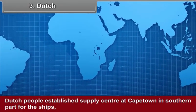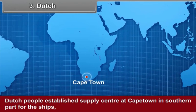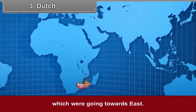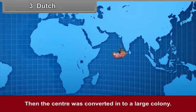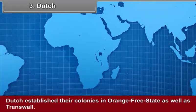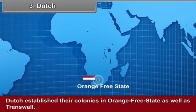Third, the Dutch. Dutch people established a supply center at Cape Town in the southern part for ships going towards the east. Then the center was converted into a large colony. Dutch established their colonies in Orange Free State as well as Transvaal.